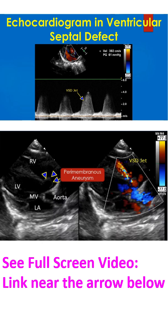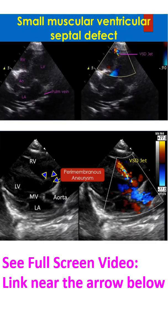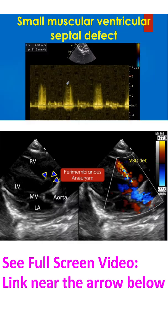Sometimes a right coronary cusp prolapse can cause aortic regurgitation even in a restrictive VSD. This echocardiogram in apical 5-chamber view shows the mosaic multicolored jet of a small ventricular septal defect near the apex. The cardiac chambers are not dilated. The small defect is difficult to see on 2D echo, though it is easily detected clinically with a pansystolic murmur, and Doppler echo documents the high velocity jet across the VSD. Continuous wave Doppler interrogation shows the interventricular pressure gradient as 81 mmHg, consistent with a restrictive VSD.